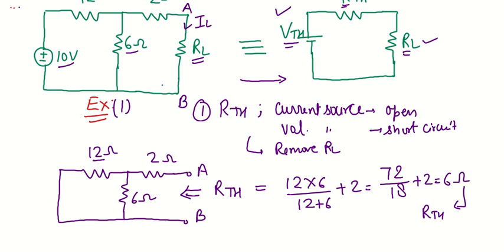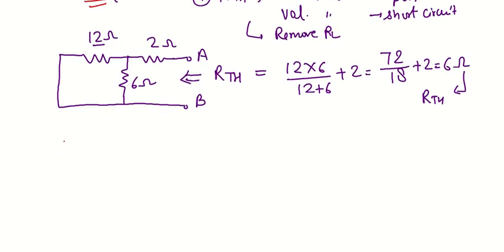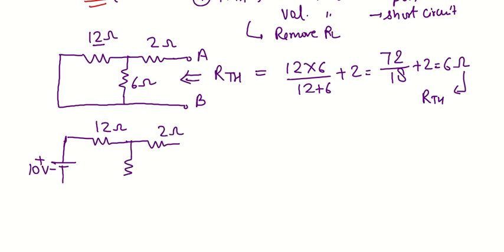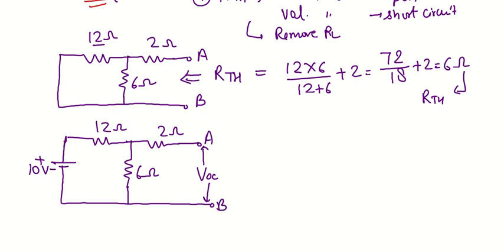Once RTH is found, the second step is to find the VTH value. For VTH the source must be active at 10 volts with all components present. We again remove RL when finding VTH, so VTH equals the open-circuit voltage VOC across the terminal from which RL was removed. Note that VTH is not the voltage drop across the load resistor itself, since RL is removed before finding VTH.